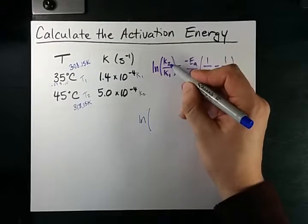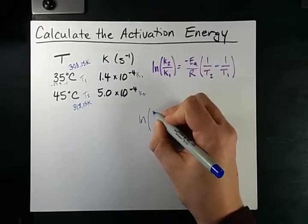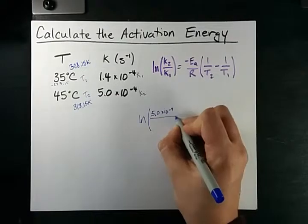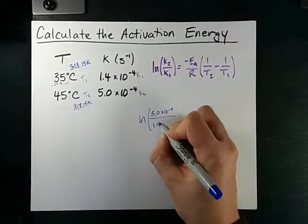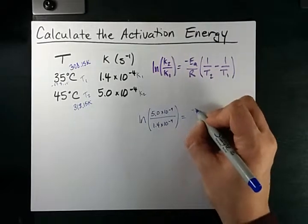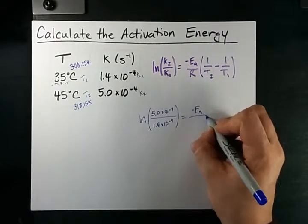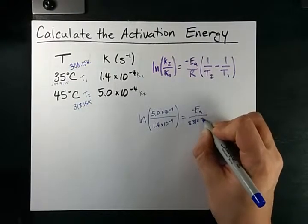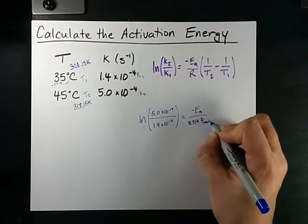The ln of K2, which I've labeled as 5.0 times 10 to the negative 4, over K1, which is 1.4 times 10 to the negative 4, is the negative activation energy over R. Now R is 8.314 joules per mole Kelvin.